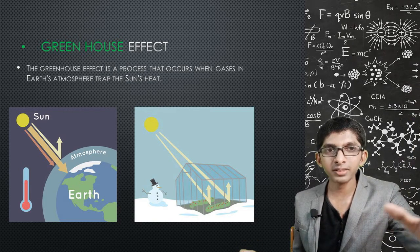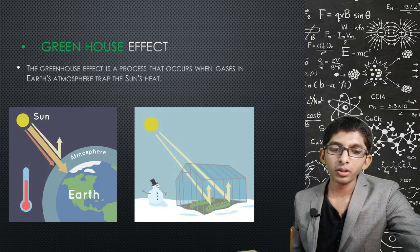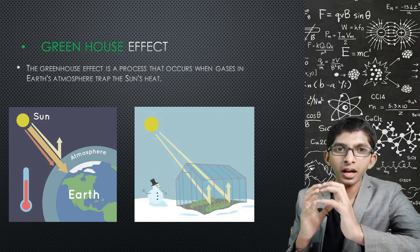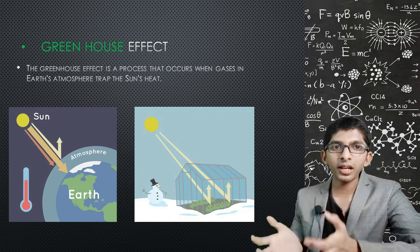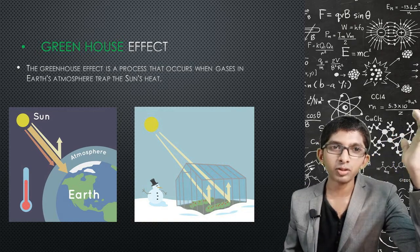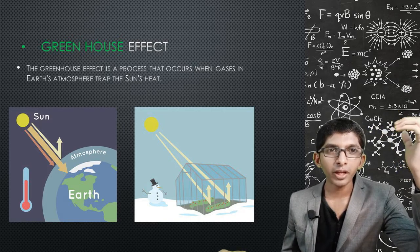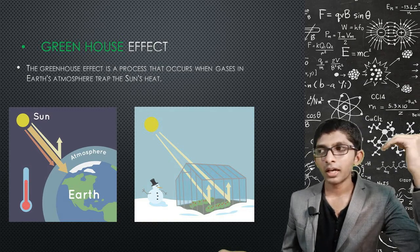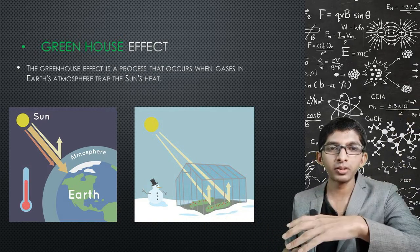However, humans are releasing excess carbon dioxide into the atmosphere, which traps more heat. Vehicles and other pollutants increase carbon dioxide levels. High carbon dioxide levels cause more heat to be trapped, leading to a dangerous rise in global temperatures.